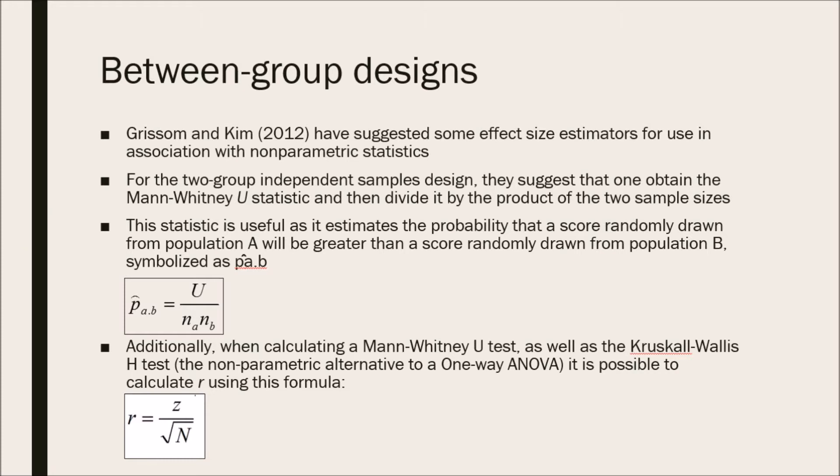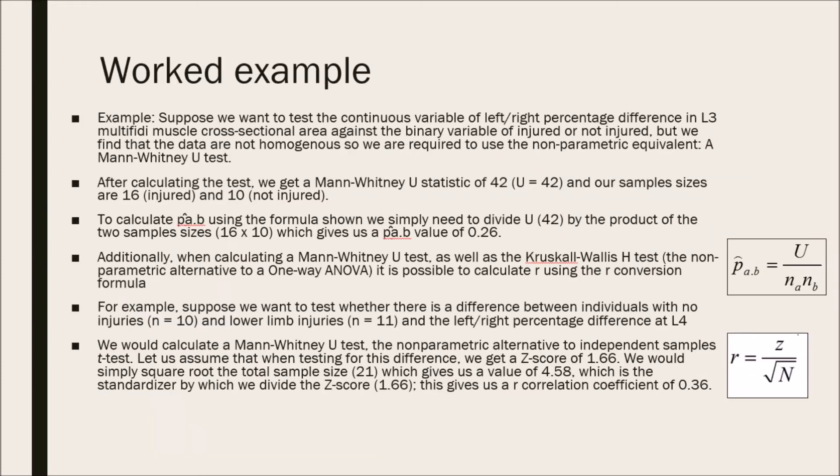For more information on that and how to interpret it, watch part 2 of the video series. Moving on to a worked example: Suppose we want to test the continuous variable of the left-right percentage difference in the L3 multifidus muscle cross-sectional area against the binary variable of injured or not injured. However, we find that the data are not homogenous and so we are required to use the non-parametric equivalent, a Mann-Whitney U test.